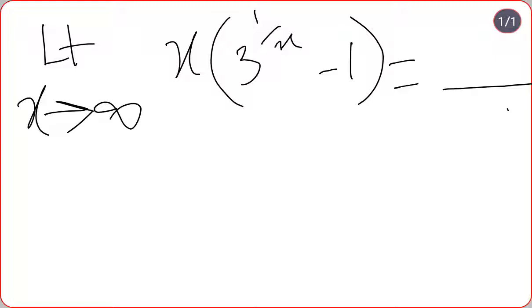The question says: limit x tends to infinity, x into 3 to the power of 1 by x minus 1, is equal to what? Now to solve this problem, we have one shortcut present in our method.